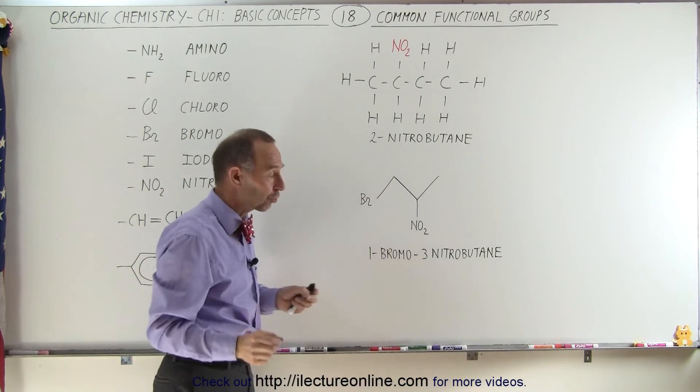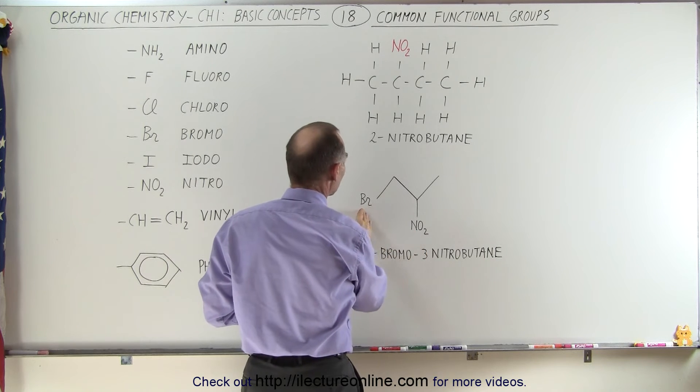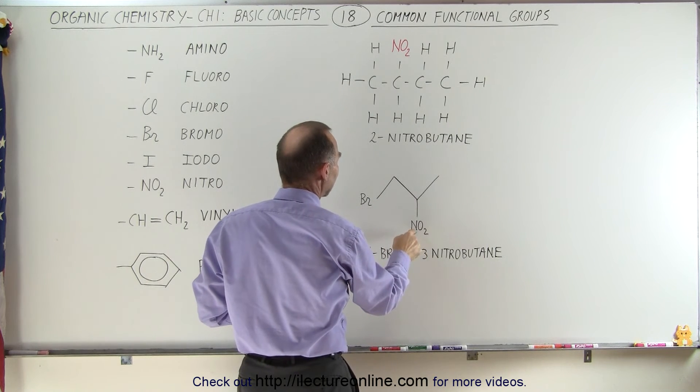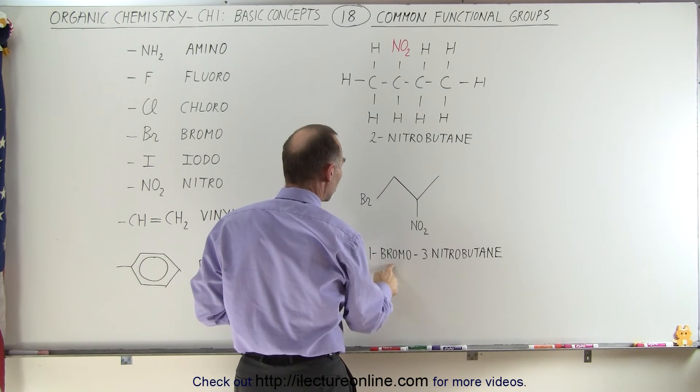Here we have two functional groups. We have bromo and nitro. Bromo is connected to the first carbon, and nitro is connected to the third carbon. So we call this 1-bromo,